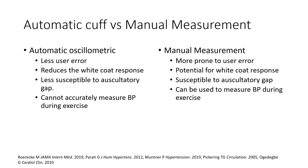Automatic devices have less user error because you don't have to set people up, place a scope, and hear things — it does it automatically. You still have to make sure the patient's positioned correctly, but generally less user error. It's not going to be prone to that oscillatory gap, where there's a prolonged period of silence, or if we under-inflate — which can happen with a manual measurement. The big limitation to an automatic oscillometric device is that it cannot be used during exercise, because it detects blood pressure through vibrations. When you walk or run, the vibration translated from your feet on the ground — the reaction forces through your body — creates vibration that makes these devices completely unreliable.